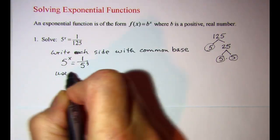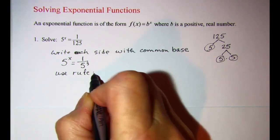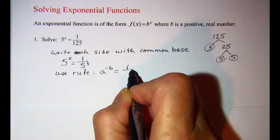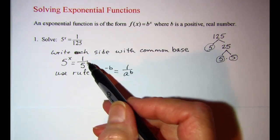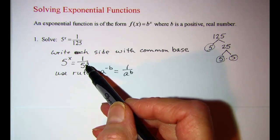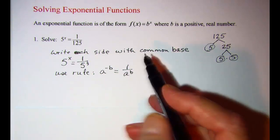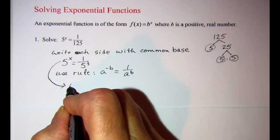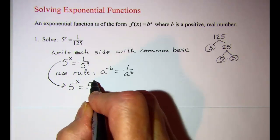So I'm going to use the rule a^(-b) = 1/a^b to switch this from 1/5^3 and make it in the numerator. So I'm basically using this rule backwards. So this then would be written 5^x = 5^(-3).